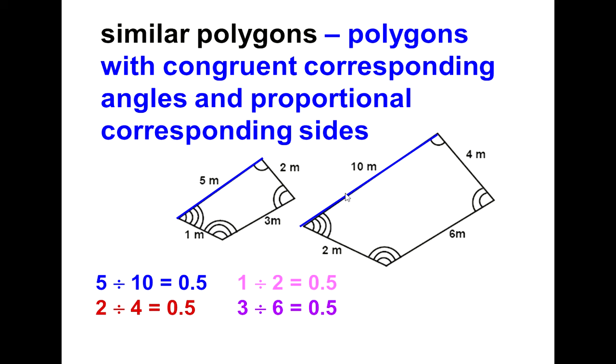So if I divide 5 by 10 or 2 by 4, see they're going the same way, 1 by 2 or 3 by 6, I get 0.5 no matter what.